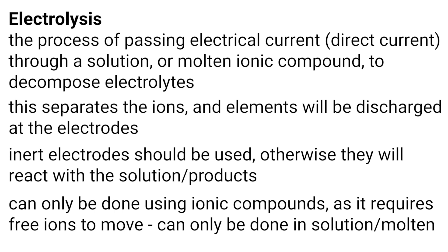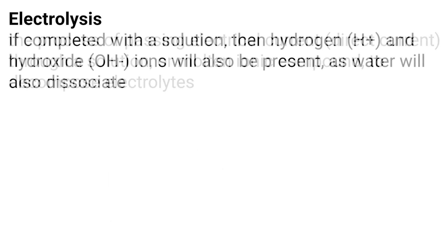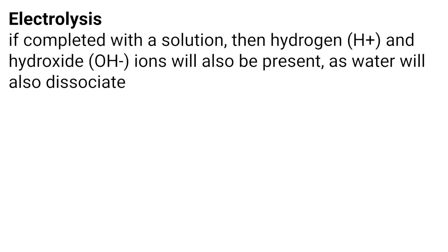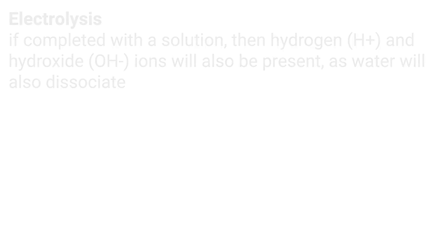Electrolysis can only be done using ionic compounds as it requires free ions to move. This is why it can only be done in solution or in the molten liquid state. If electrolysis is completed with a solution, then hydrogen and hydroxide ions are also present, as water will also dissociate.